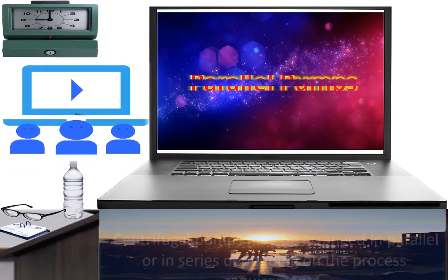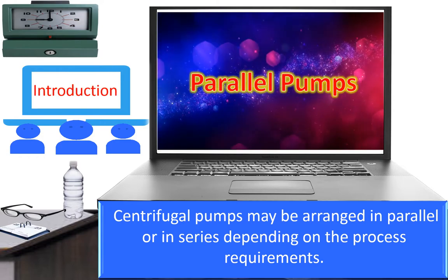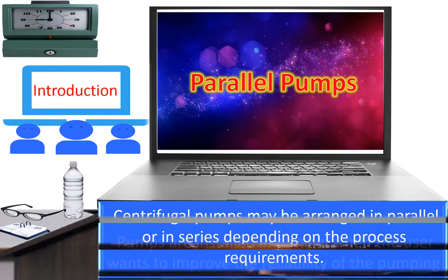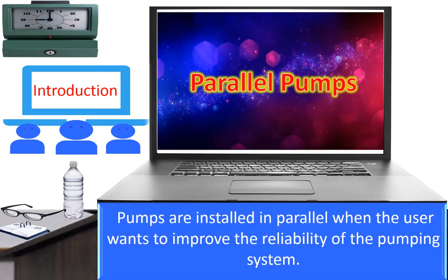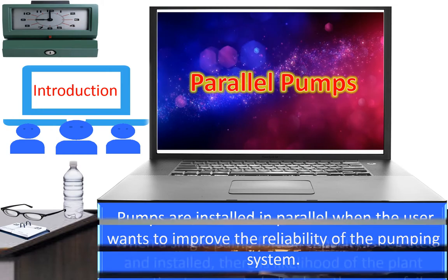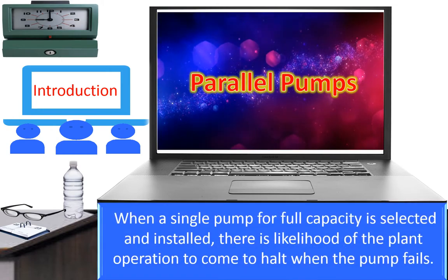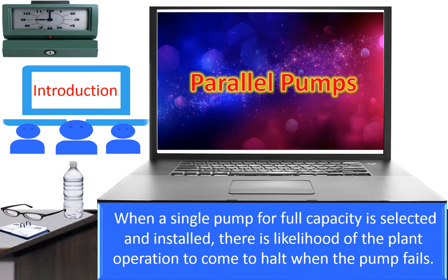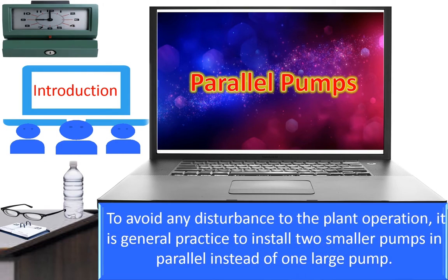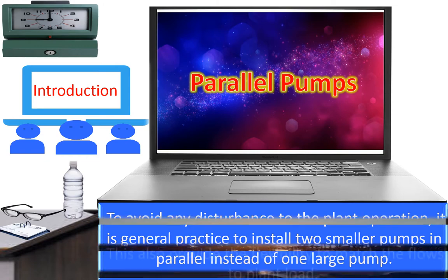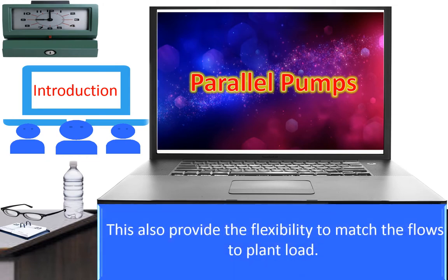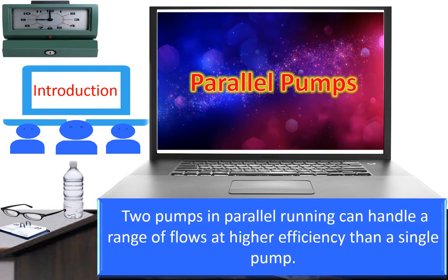Parallel pumps: Centrifugal pumps may be arranged in parallel or in series depending on the process requirements. Pumps are installed in parallel when the user wants to improve the reliability of the pumping system. When a single pump for the full capacity is selected and installed, there is likelihood of the plant operation to come to halt when the pump fails. To avoid any disturbance to the plant operation, it is general practice to install two similar pumps in parallel instead of one large pump. This also provides the flexibility to match the flows to the plant load. Two pumps in parallel running can handle a range of flows at higher efficiency than a single pump.